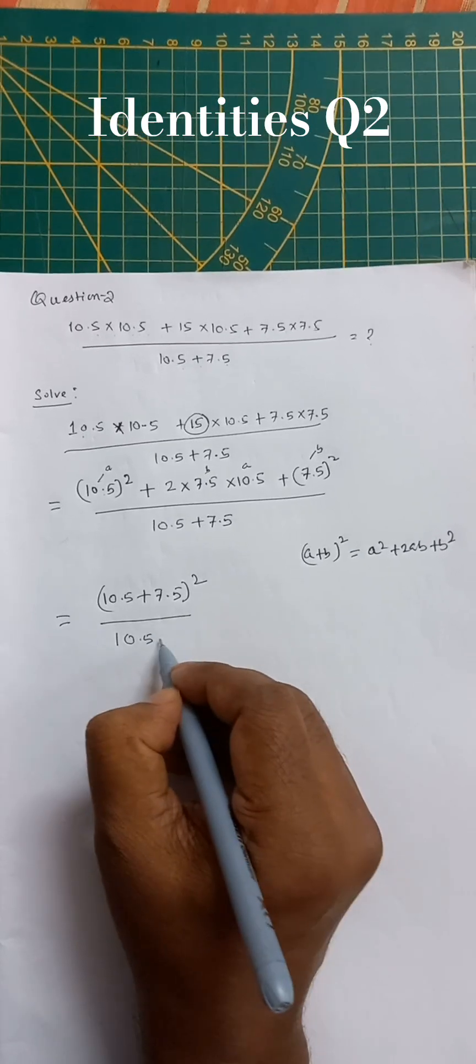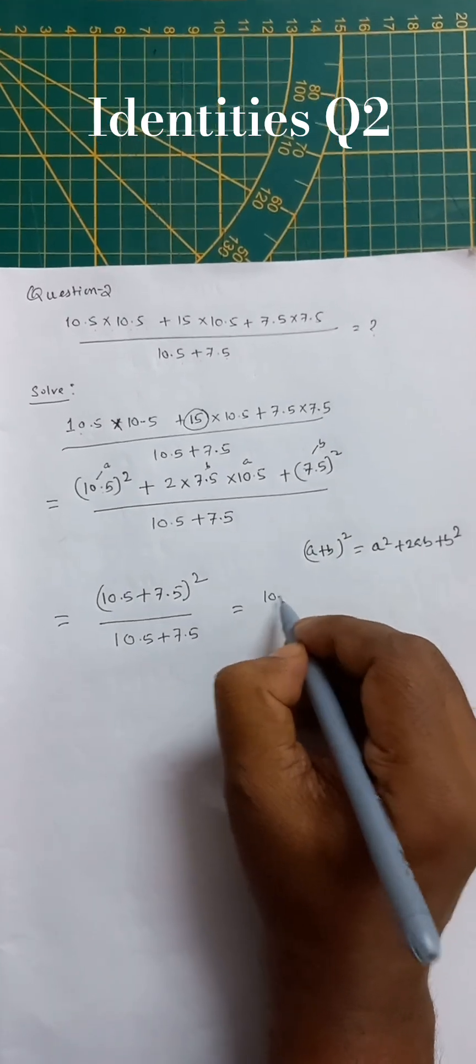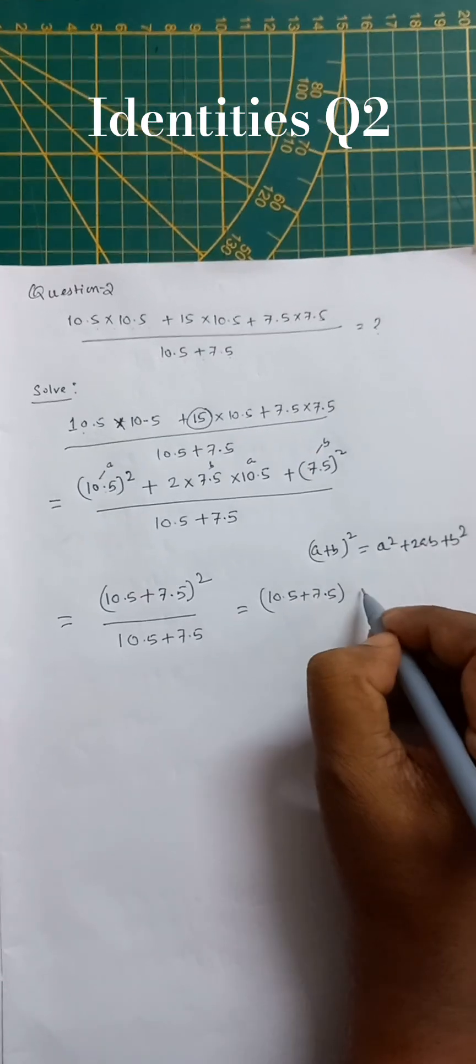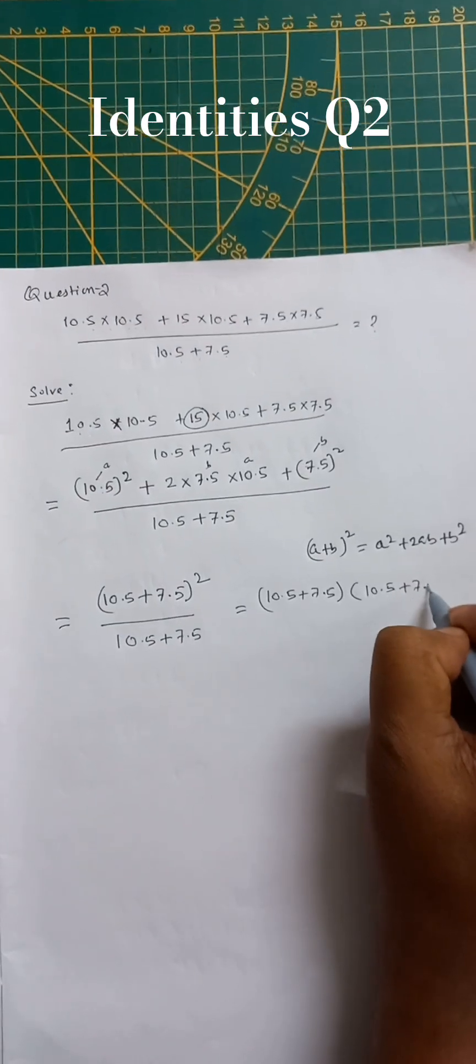So 10.5 plus 7.5 bracket, 10.5 plus 7.5.